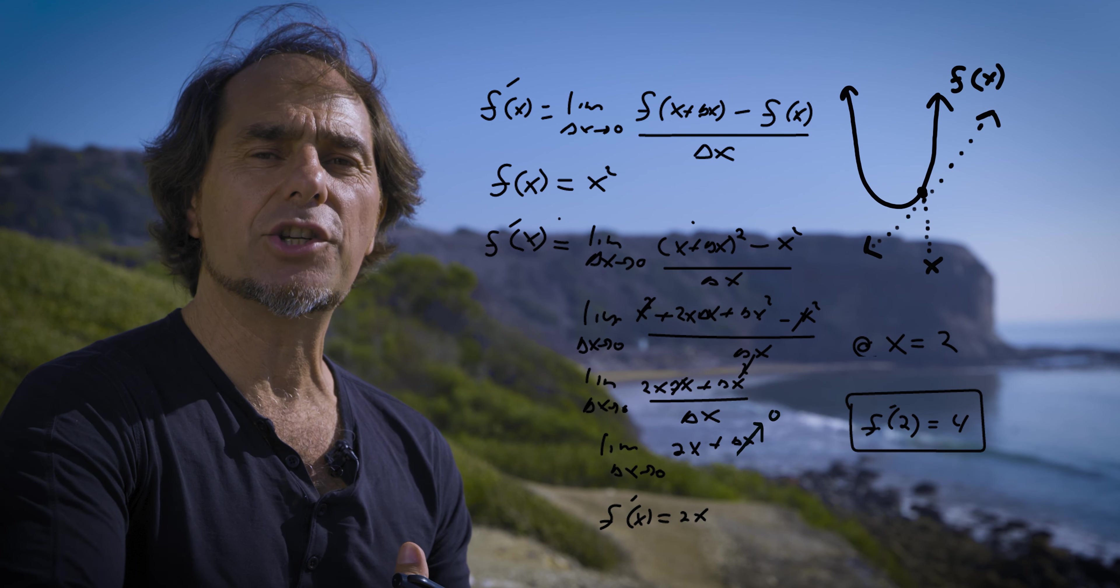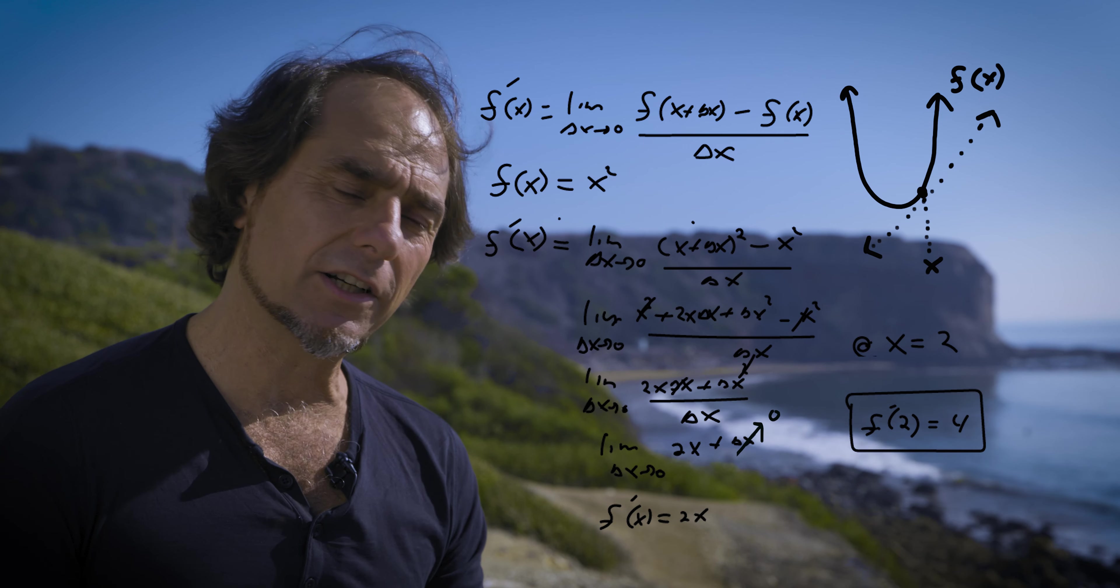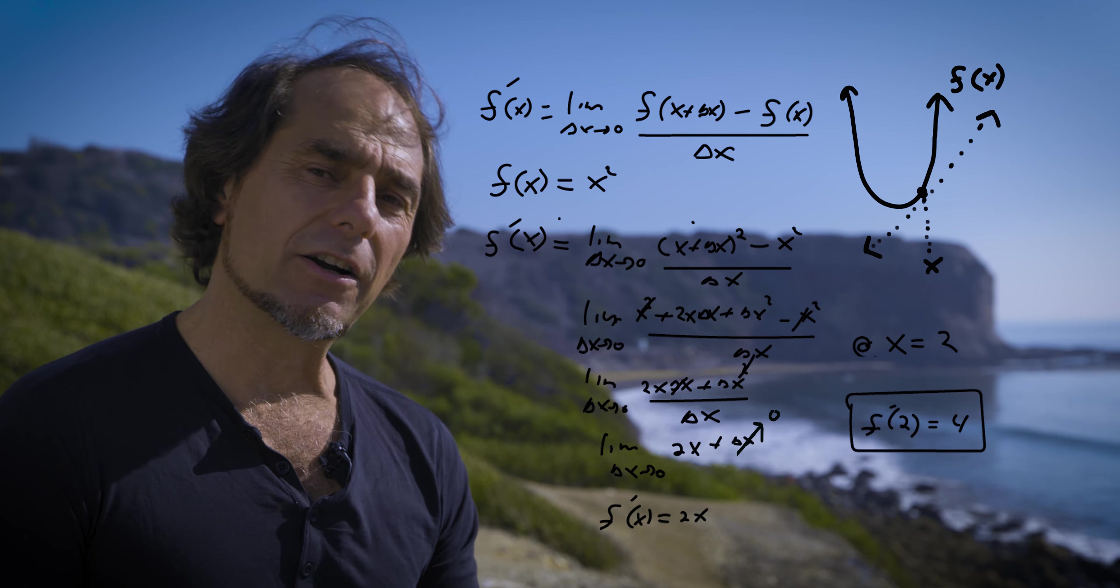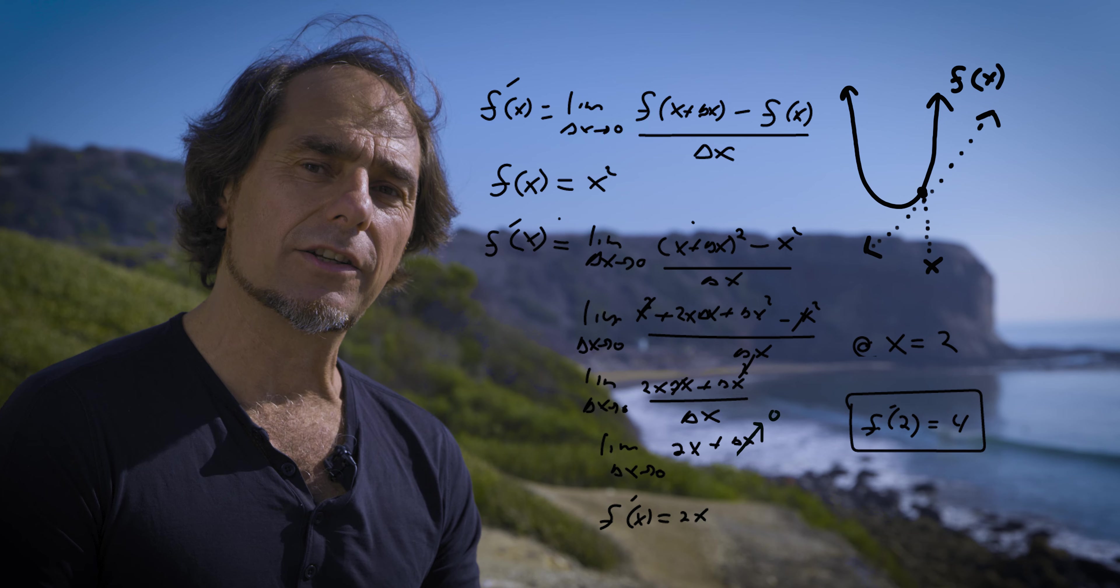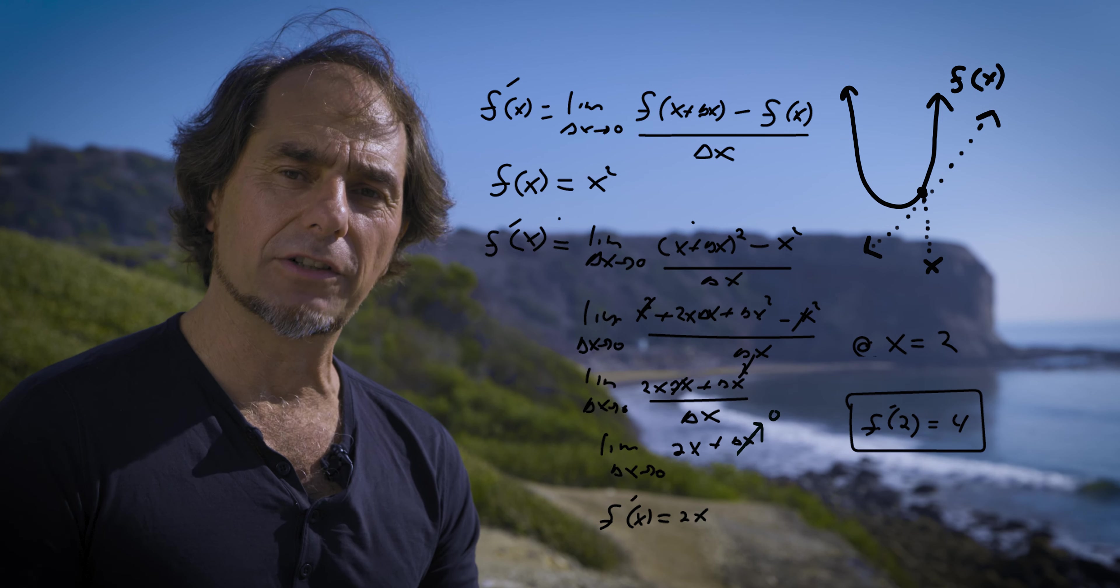Or if you were changing velocity per time, that would be acceleration. Derivatives end up telling us rates of change for all different kinds of quantities in the universe, in our world, in nature. And they're a very vital, important part to finding mathematical descriptions of our world and universe.